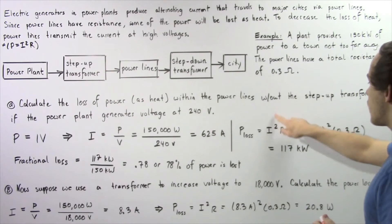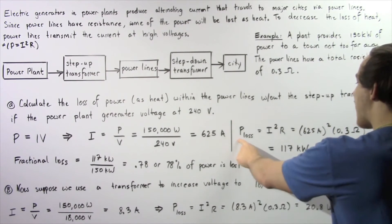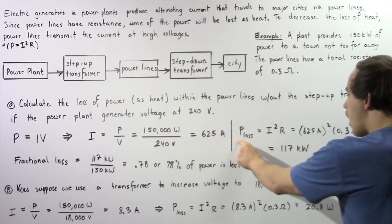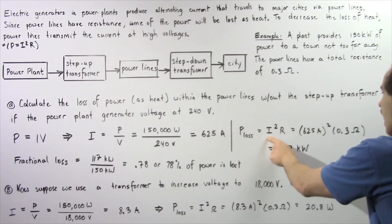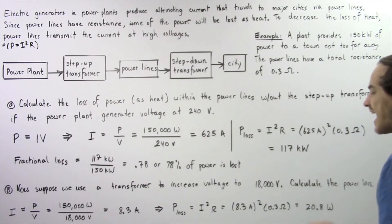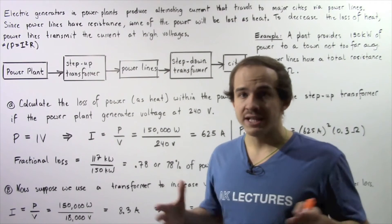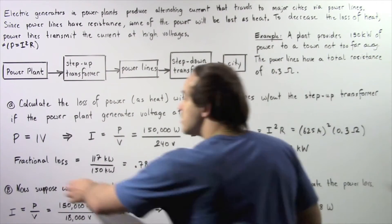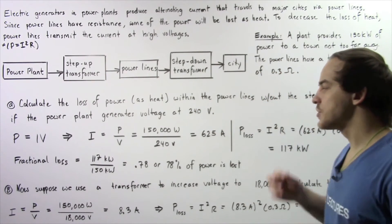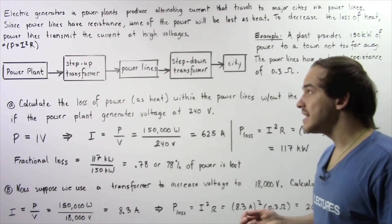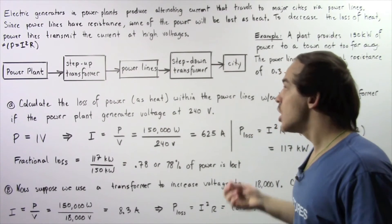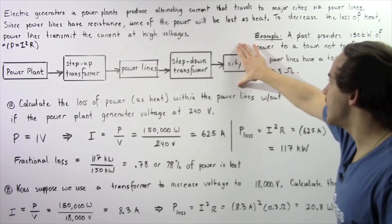The power loss is equal to I squared times R, where I is 625 amps. Squaring that and multiplying by 0.3 ohms gives us 117 kilowatts of power completely lost as heat. The fractional loss is 117 kilowatts divided by the total 150 kilowatts, which gives us 0.78 — about 78% of the power produced inside the plant is dissipated in the resistance of the power lines. Only 22% of the power actually gets to the city or town.